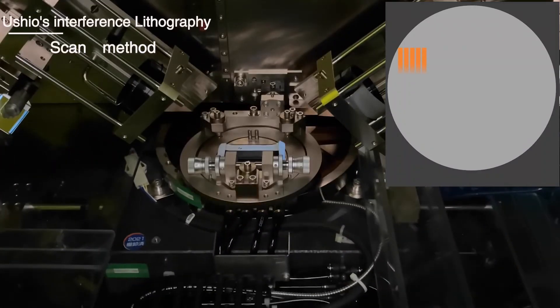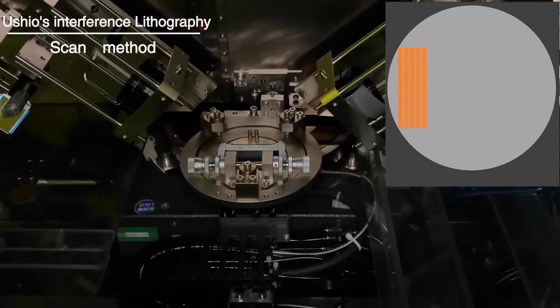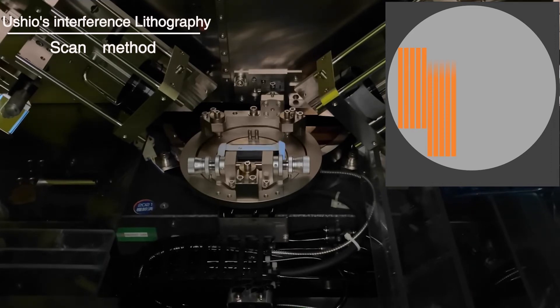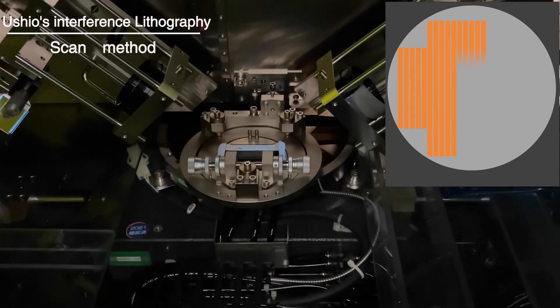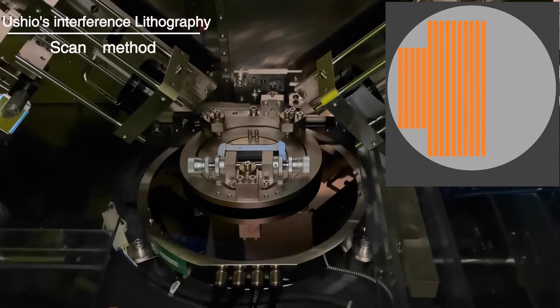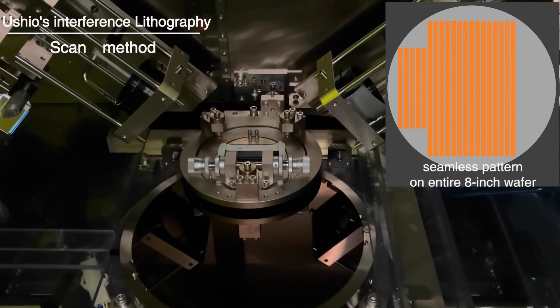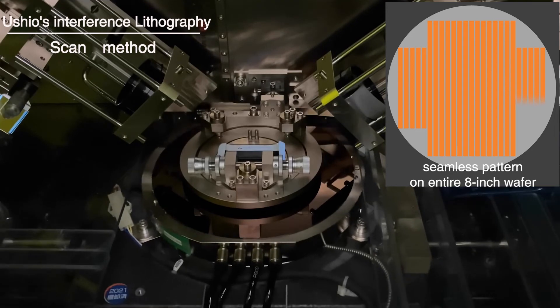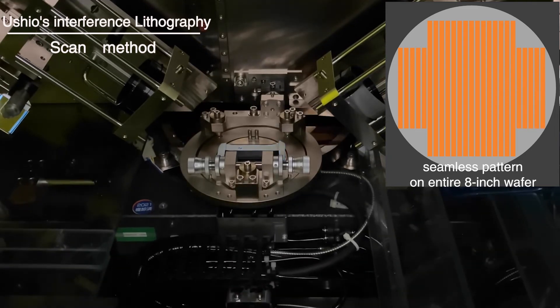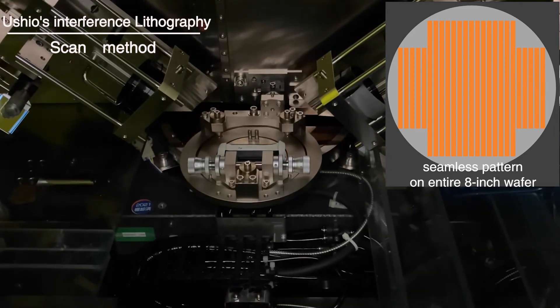To solve that problem, Ushuo's interference lithography system overlaps the spot and scans the entire 8-inch wafer. This makes it possible to fabricate large area optical components with excellent optical performance and appearance.